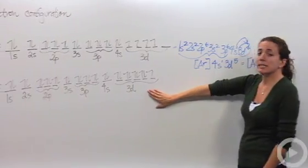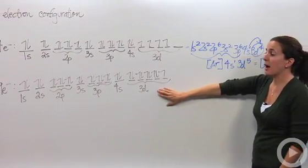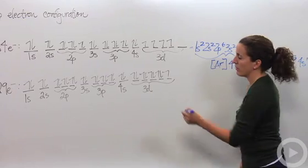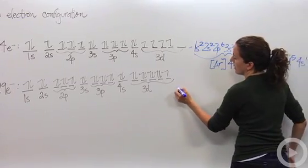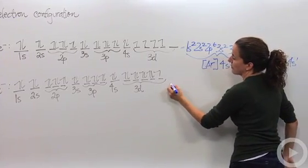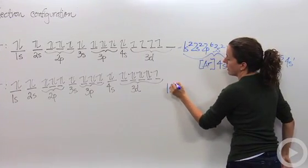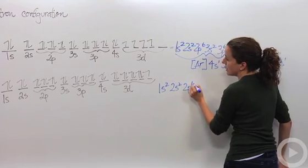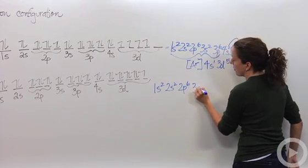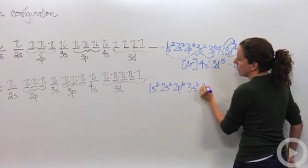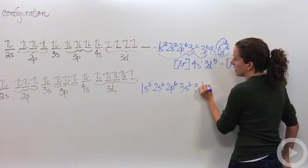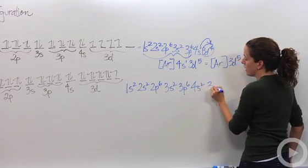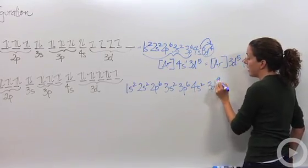The other exception you're going to see is copper. Let's make the electron configuration for that: 1s2, 2s2, 2p6, 3s2, 3p6, 4s2, 3d9.